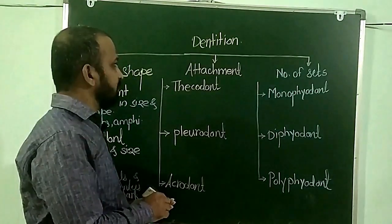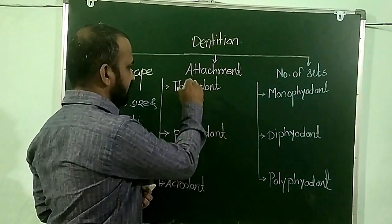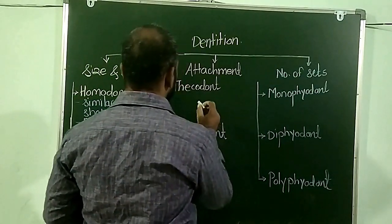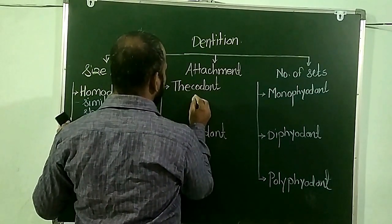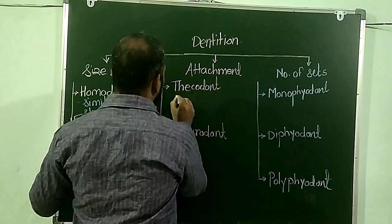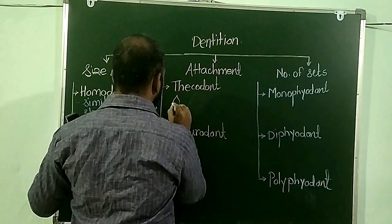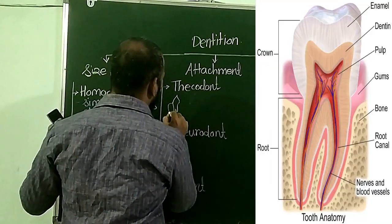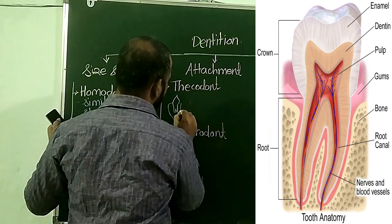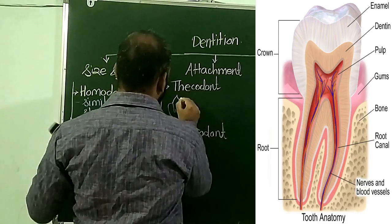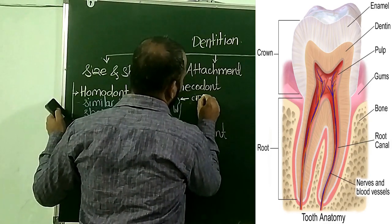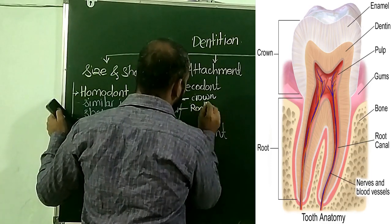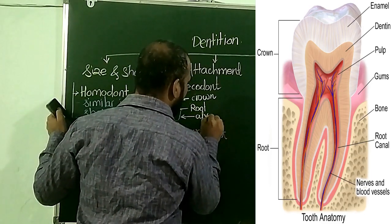On the basis of attachment, the teeth are classified into three types. In case of the Thecodont condition, which is present in mammals, the teeth are lodged in the bony socket called the alveolus. This particular portion is called the crown of the teeth, and these are the roots which are lodged into the bony socket.